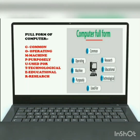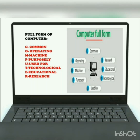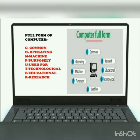Now, forwarding to the full form of computer. C for Common, O for Operating, M for Machine, P for Purposely, U for Used for, T for Technological, E for Educational, R for Research. Kids, you are now seeing a diagram which is depicting the full form of computer. You just draw it on your class copy and show me. It will help you to learn the full form of computer.